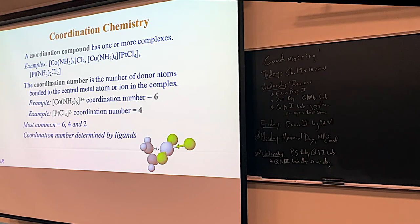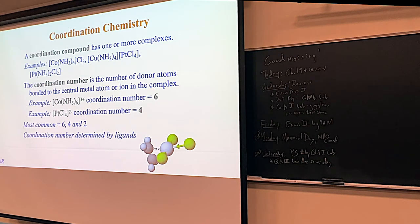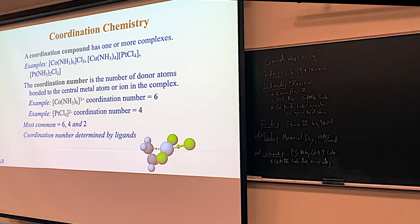Complex ions are Lewis acids with Lewis base ligands around them. If you take a complex ion and put it with some kind of counter ion, you make a neutral compound — these are called coordination compounds. A coordination compound is something that, in theory, you could actually make as a solid. Coordination compounds are neutral. The coordination number just depends on how many connections there are between the ligands and the central atom.